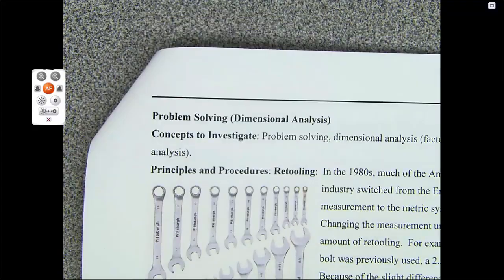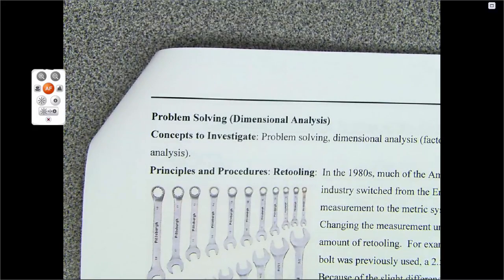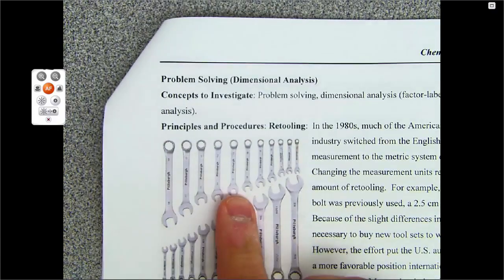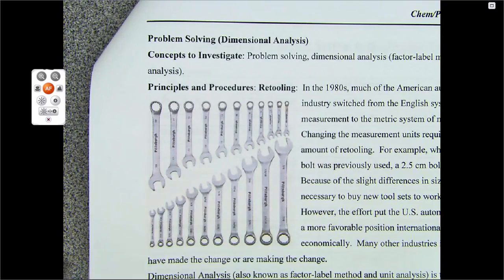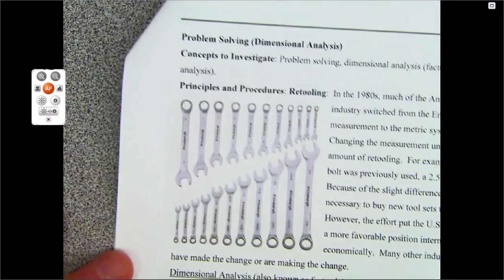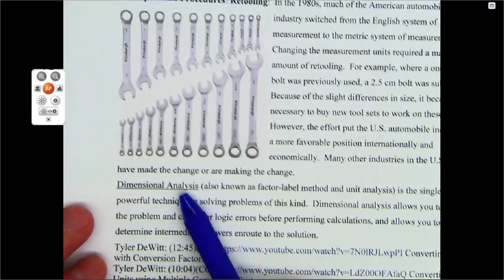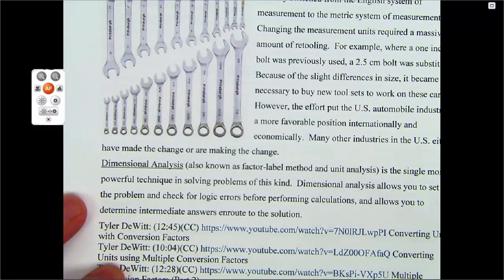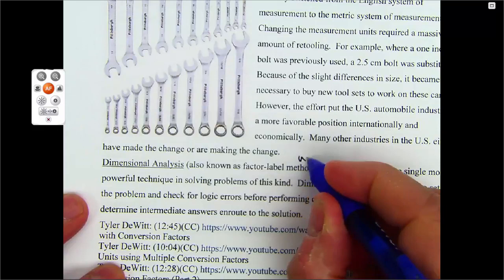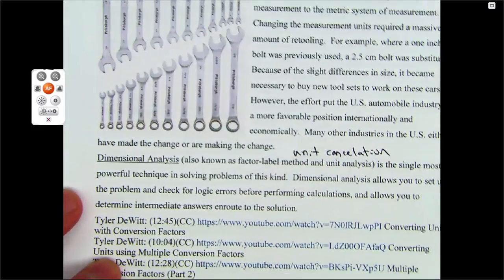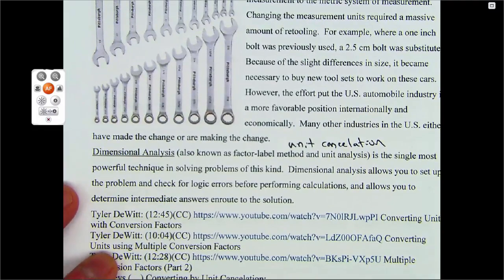One of the first things that brought about changes to the metric system was automobile tooling, wrenches in the metric system now. I'm going to show you how to calculate what's called dimensional analysis. Other names for it are factor label method, unit analysis, or what I like to say is unit cancellation.